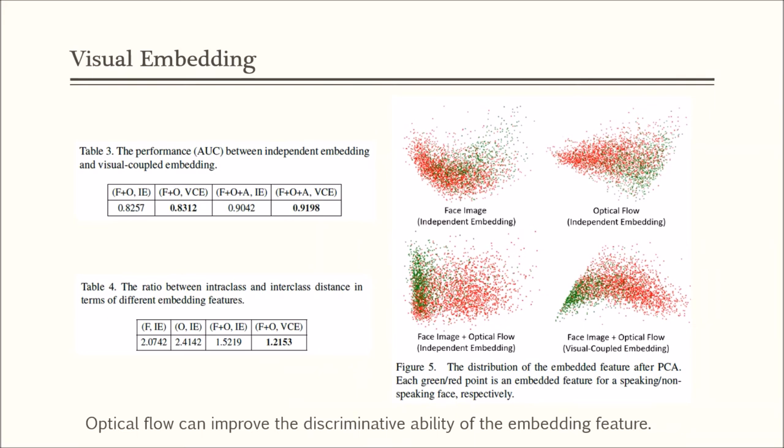Table 4 quantifies the separability of different embedding features in terms of ratio between intra-class and inter-class distance. We can see that the fusion of optical flow and face image appears to be more separable than the single modality features. Meanwhile, the visual-coupled embedding performs better than the independent embedding, proving that visual-coupled embedding can generate more discriminative features. This can explain why the visual-coupled embedding network can achieve more accurate classification.